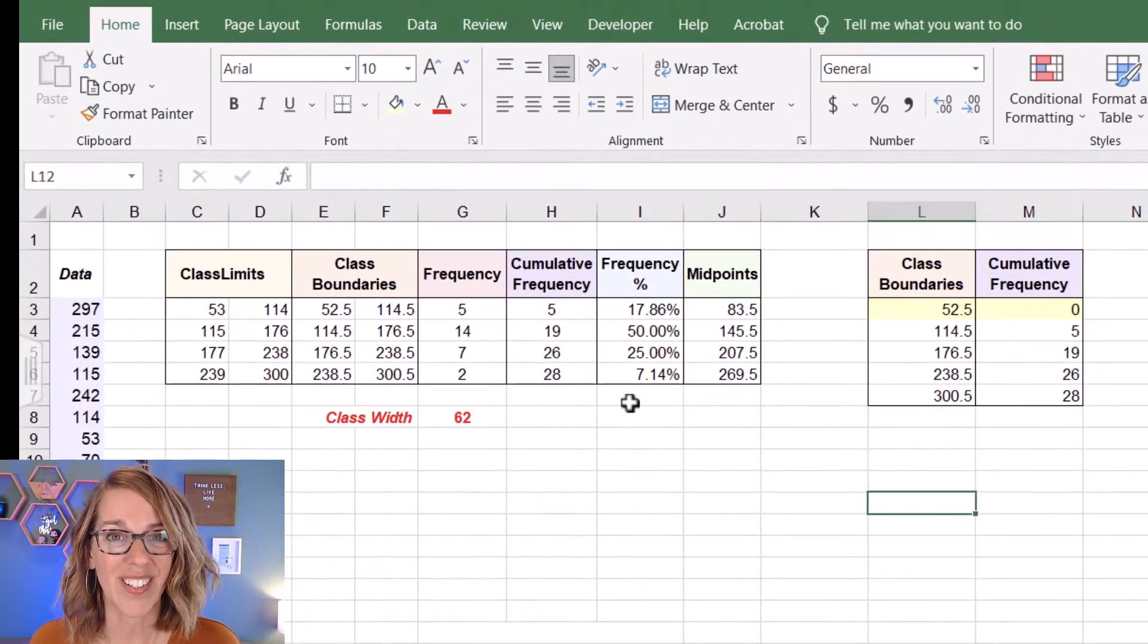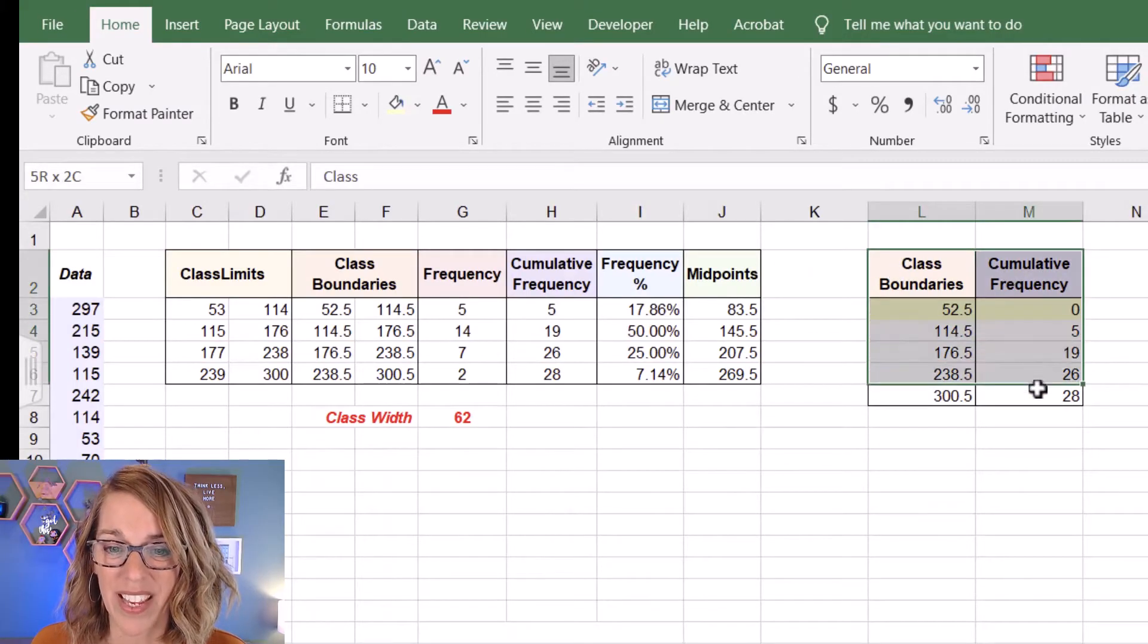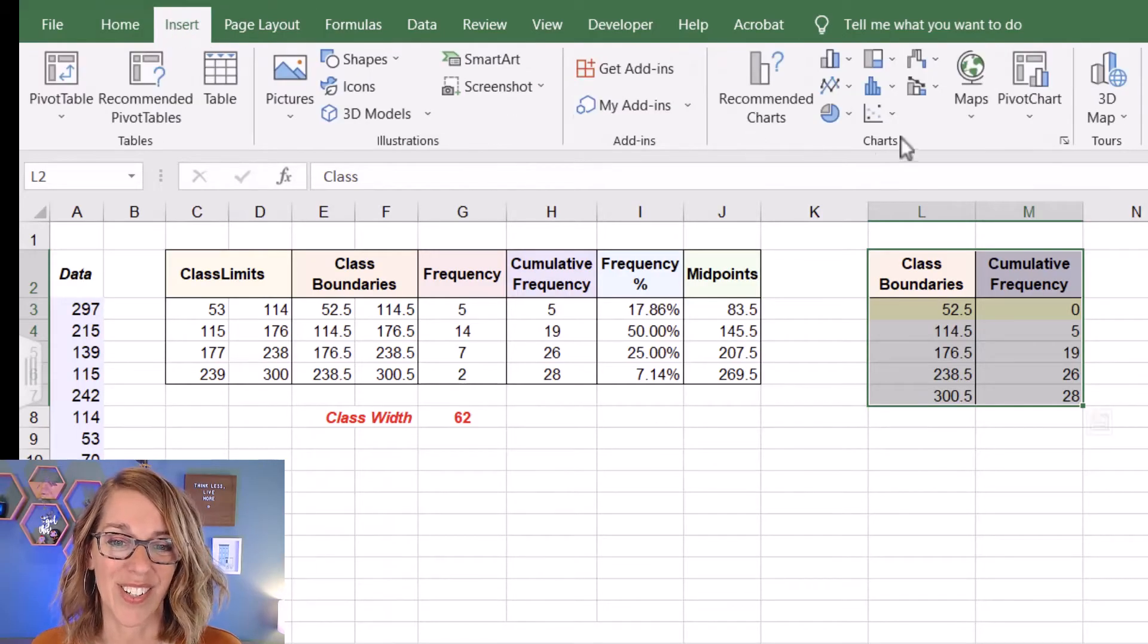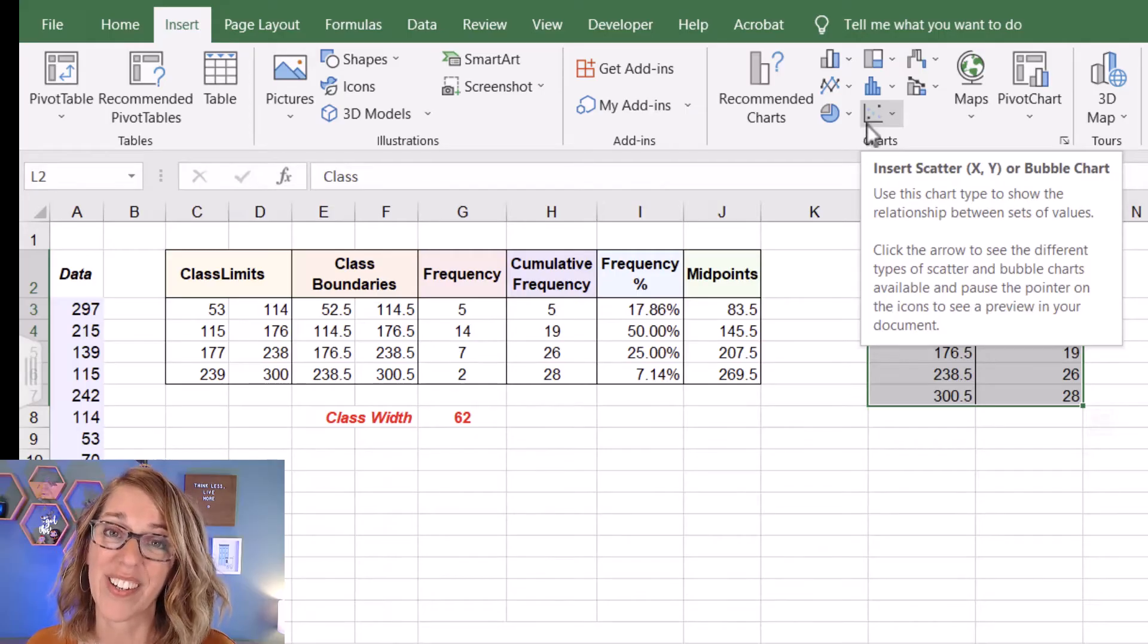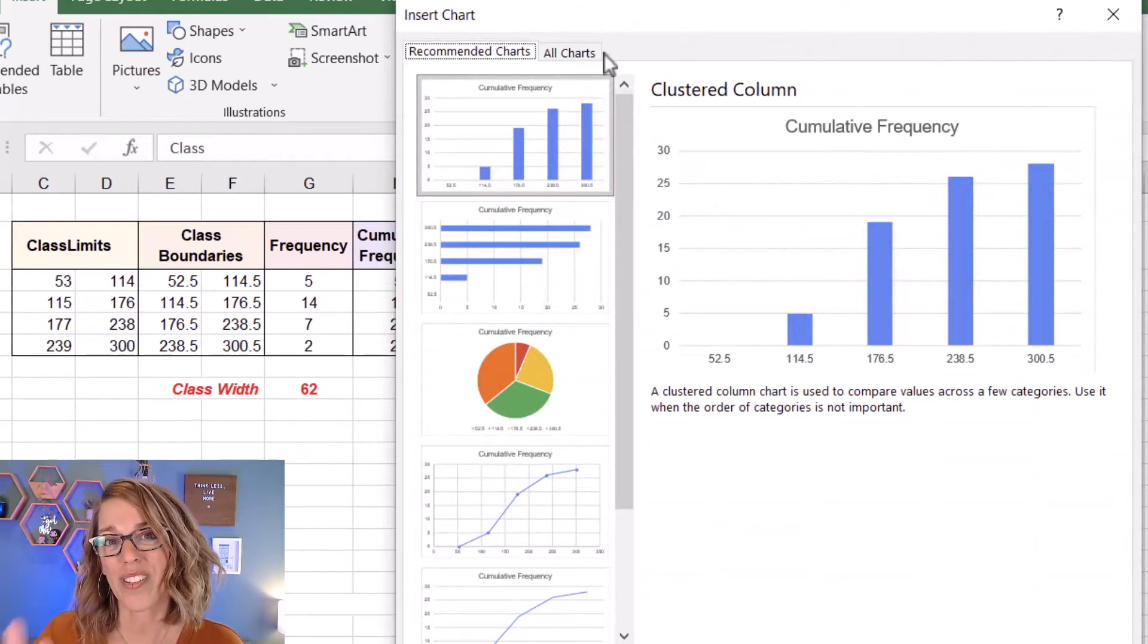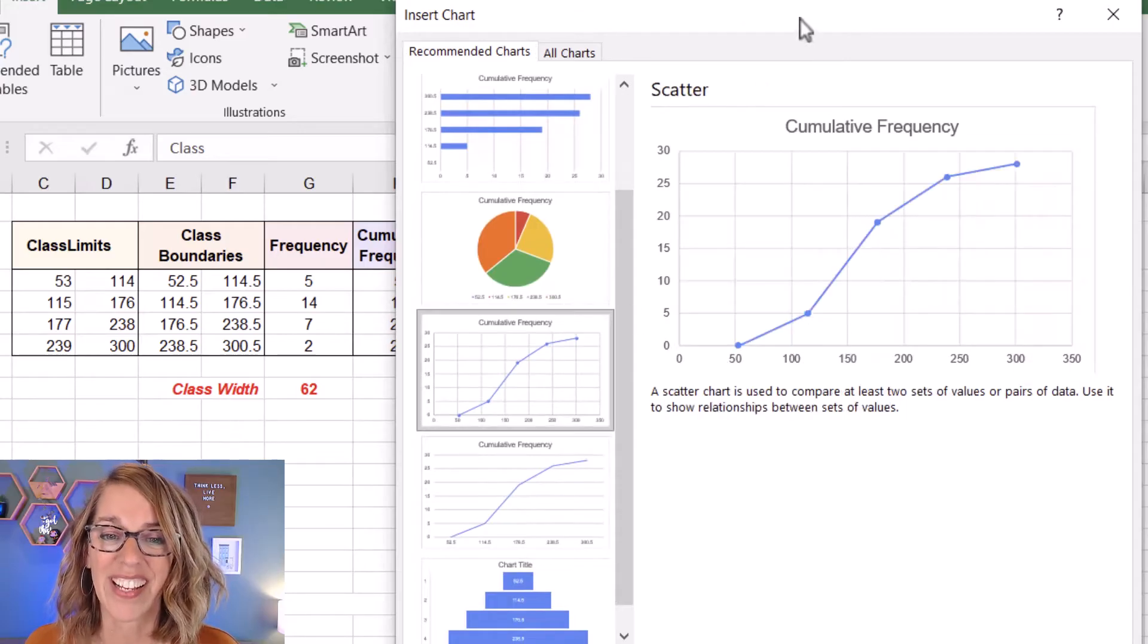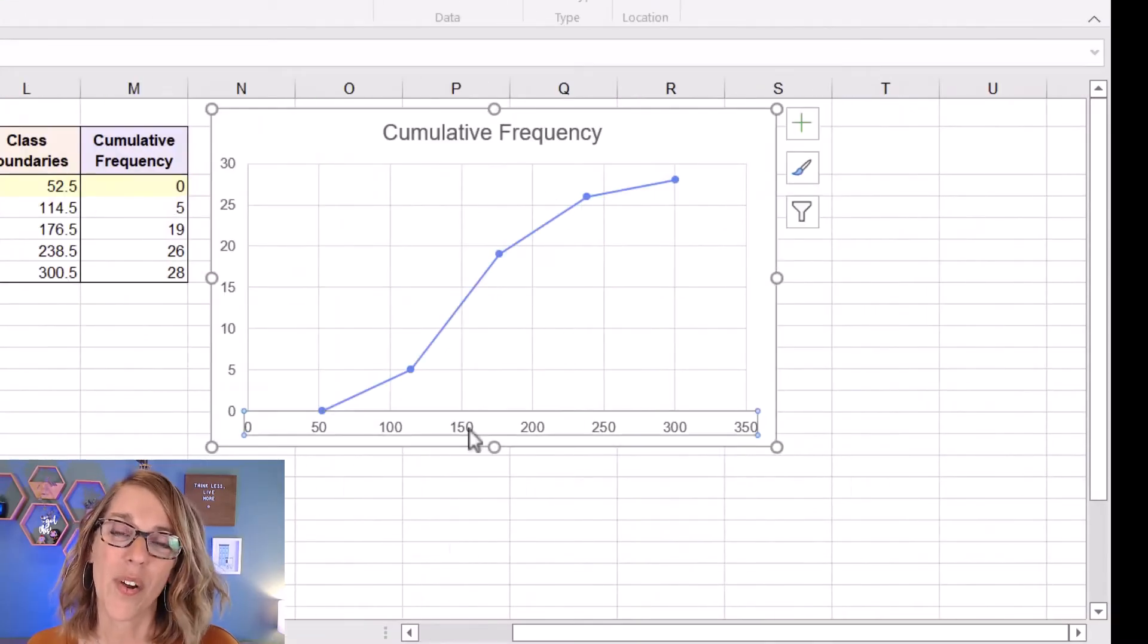I'm going to plot this using Excel's scatter plot. Let's go ahead and highlight by clicking, holding, and dragging through our data. And then I'm going to click on insert. You can either choose the scatter plot option here with the connected lines or you can go to recommended charts. Now I don't want the bar chart, but as I scroll through my recommended charts, I see that it has recommended the one that I want. I click on that one and that's that scatter plot. Let's go ahead and click on OK.